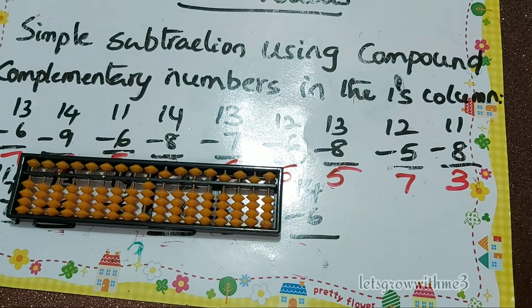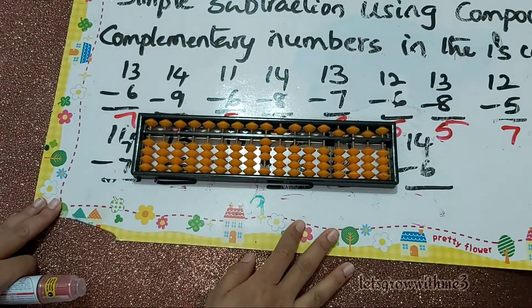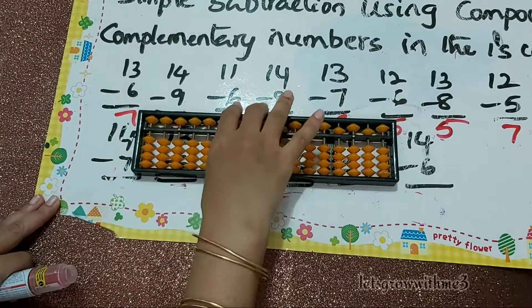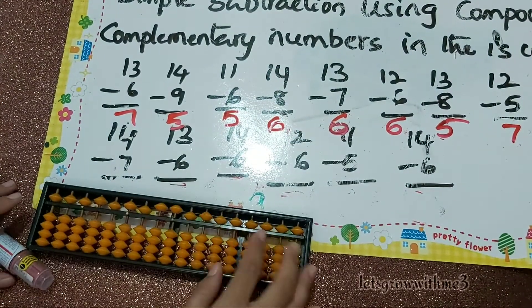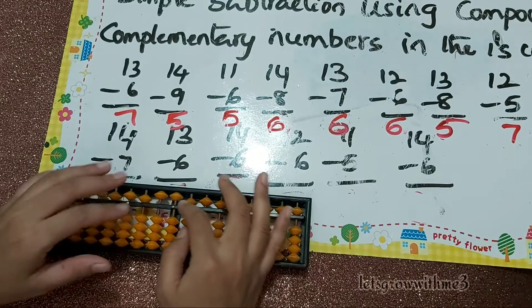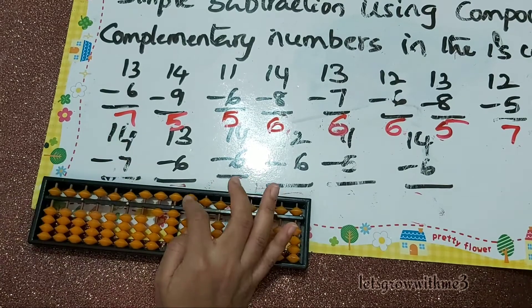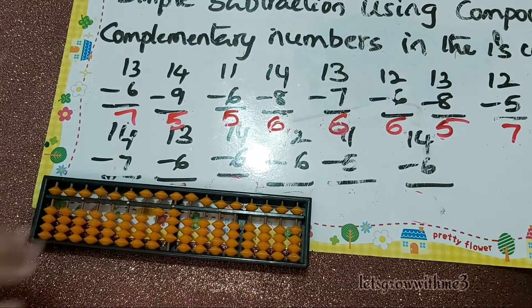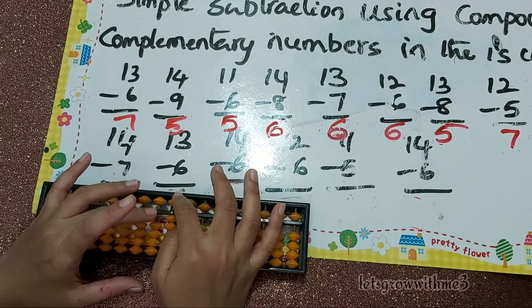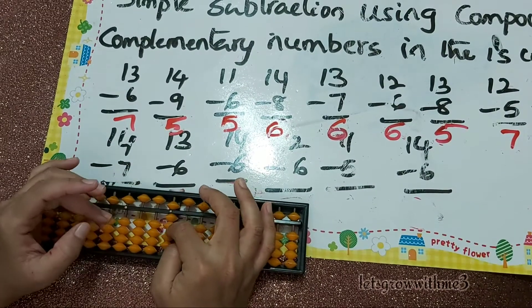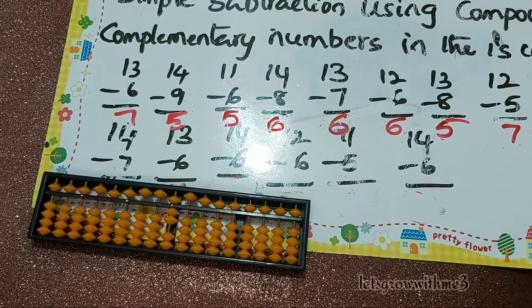Next: 14 minus 7. How to do minus 7? Minus 10 plus 5 minus 2. So the answer is 7.